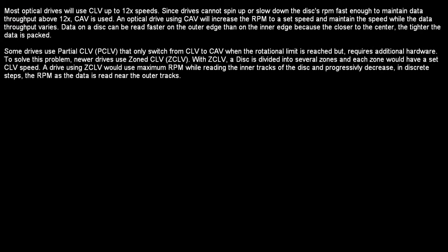Now, most optical drives will use CLV up to 12x speeds. Since drives cannot spin up or slow down the disk's RPM fast enough to maintain data throughput above 12x, constant angular velocity is used. An optical drive using CAV will increase the RPM to a set speed and maintain that speed while the data throughput varies. Data on a disk can be read faster on the outer edge than on the inner edge because the closer to the center, the tighter the data is packed. Some drives use partial CLV that only switches from CLV to CAV when the rotational limit is reached, but requires additional hardware.